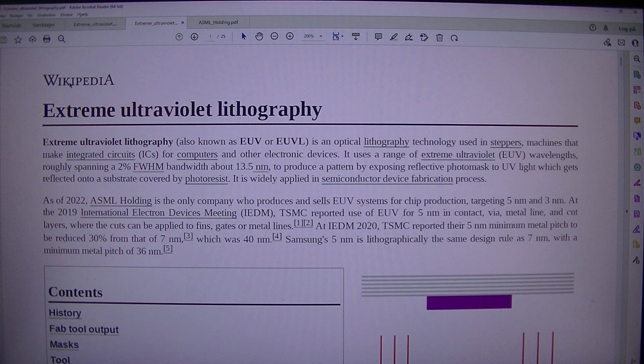Extreme ultraviolet lithography, also known as EUV or EUVL, is an optical lithography technology used in steppers, machines that make integrated circuits for computers and other electronic devices. It uses a range of extreme ultraviolet EUV wavelengths, roughly spanning a 2% FWHM bandwidth about 13.5 nm, to produce